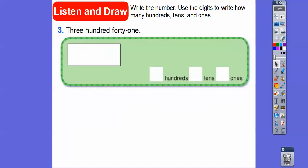How about this? 341. So there's 341. 3, 4, 1. So 3 goes in the hundreds, 4 goes in the tens, 1 goes in the ones right there.